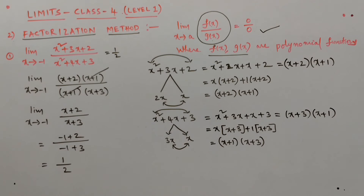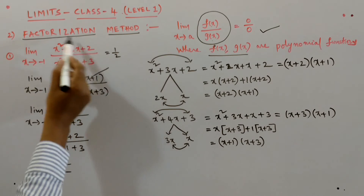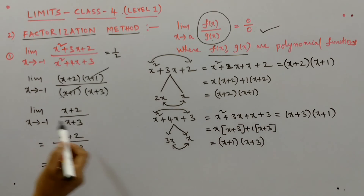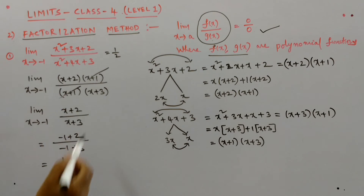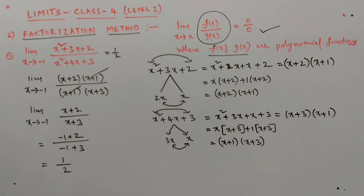For any problem, first we try to calculate the limit by direct substitution method. When we get an indeterminate form, we go for another method. For this problem, we used the factorization method. The factors of x squared plus 3x plus 2 are x plus 2 into x plus 1, and the factors of x squared plus 4x plus 3 are x plus 1 into x plus 3. After cancellation and simplification, the limit of the function is 1 by 2. I hope you understand this factorization method. Please subscribe to my channel. Have a nice time, see you next time, bye.